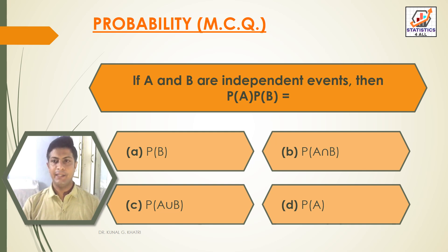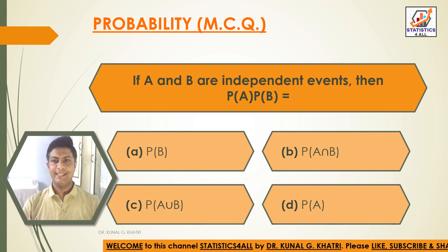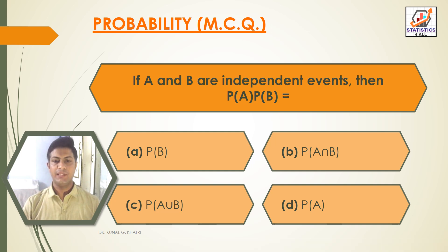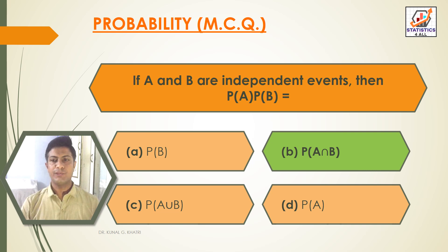Question 17: If A and B are independent events, then P(A) · P(B) equals? Answer: Option B — P(A∩B). If A and B are independent events, P(A) · P(B) = P(A∩B).